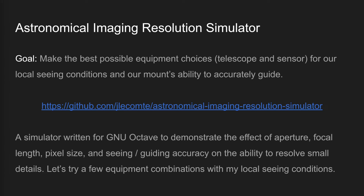Now that we have a way to measure the combined effect of atmospheric seeing and guiding inaccuracies, how can we make more educated decisions on our equipment? In my case, I have a pretty good mount — an iOptron CEM70 that guides very well — and I'm contemplating a new OTA and camera. To help with this, I made a little simulator using GNU Octave, which is a free and open-source version of MATLAB. I posted the code on GitHub so you can check it out and play with it.